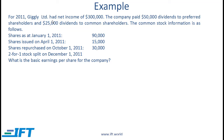Let's make the question a little more complicated. In 2011, the net income was 300,000, 50,000 was paid to preferred shareholders, and 25,000 to common shareholders. Shares outstanding at the start of the year were 90,000, then 15,000 new shares were issued. The company also repurchased shares — this is called a treasury stock operation — and there was a 2-for-1 split on December 1, 2011.